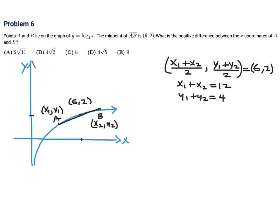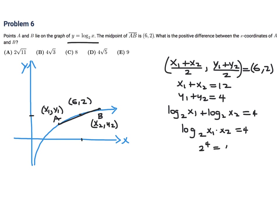Since y equals log base 2 of x, we have log base 2 of x₁ plus log base 2 of x₂ equals 4. Using log rules, we can combine them: log base 2 of (x₁ times x₂) equals 4. Using log rules again, that means 2 to the power of 4 equals x₁ times x₂, and therefore x₁ times x₂ equals 16.